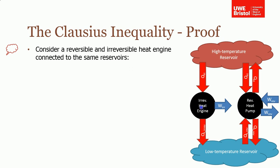We've got an irreversible heat engine connected to a high temperature reservoir and a low temperature reservoir. It takes on some heat QH, does some irreversible work, and rejects some irreversible heat to the low temperature reservoir. And our reversible heat engine — because obviously it can run in either direction — takes on the heat, does some work, rejects heat, or it takes heat combined with work to pump that heat into the high temperature reservoir.